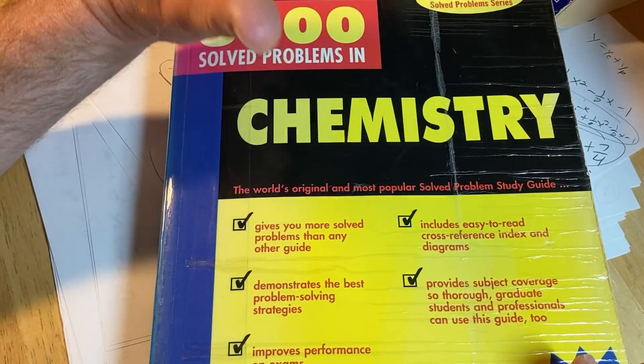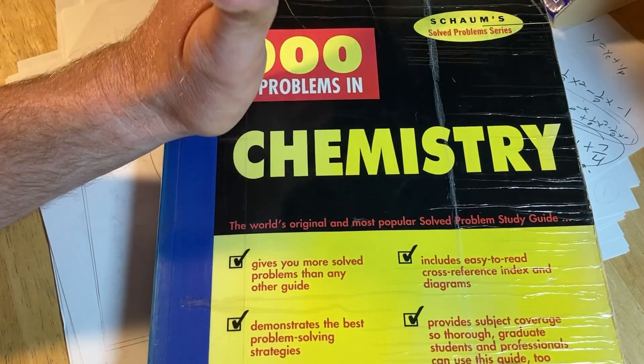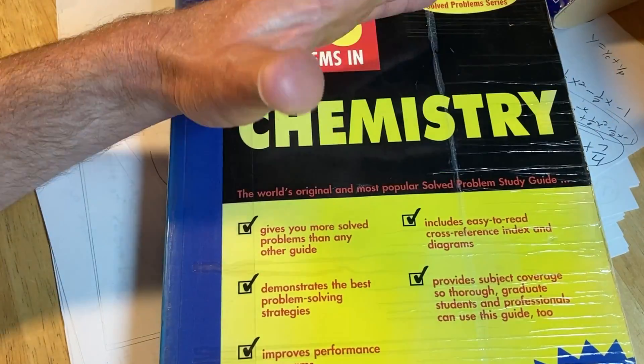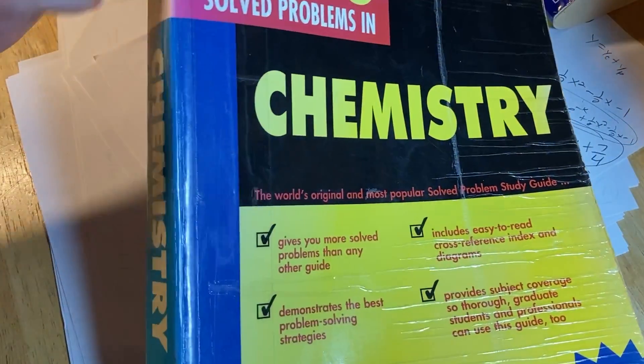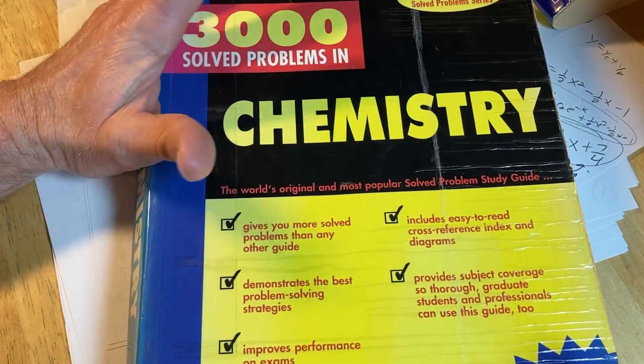So Schaum's makes all kinds of books for all kinds of subjects. As a collector of math and science books, I have over 40 different Schaum's books, most of them being on mathematics, but I do have a few chemistry ones. And I think this one is amazing. With this book, you can learn to do tons of problems.